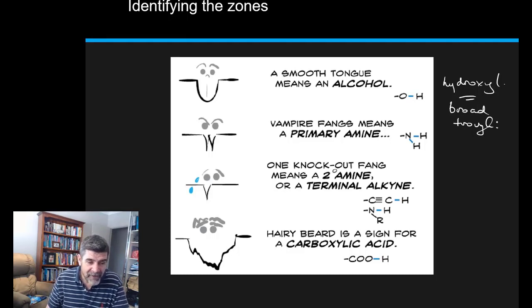A knockout fang is the secondary amine. Secondary amines occur exactly the same as secondary alcohols - that means they're attached to a carbon that is attached to two other carbons. There's also a terminal alkyne which is another way of getting this little knockout fang. And then there's the hairy beard which is a sign for the carboxylic acid.